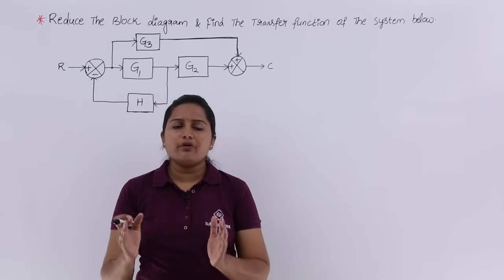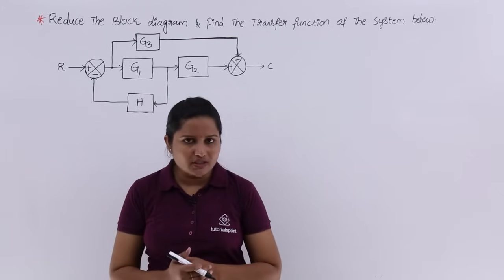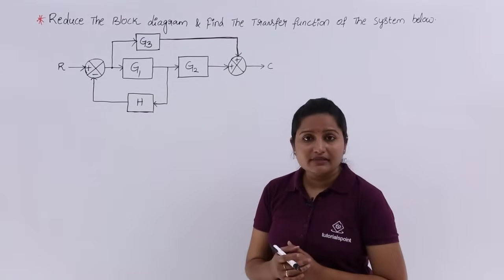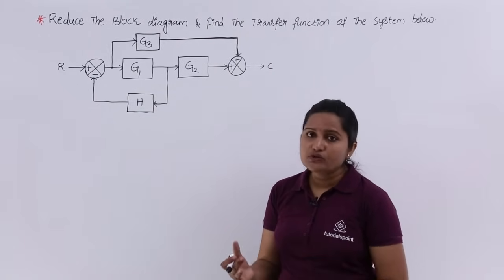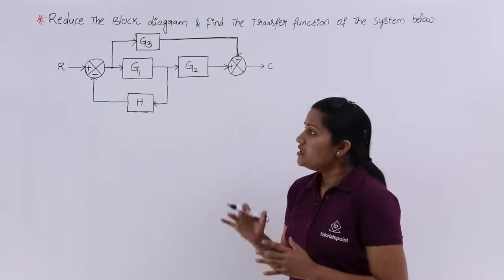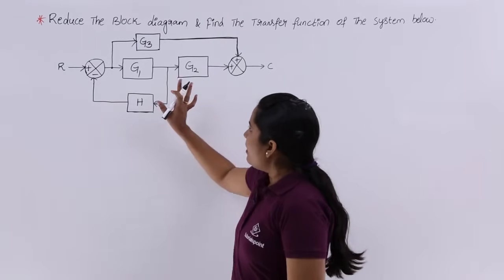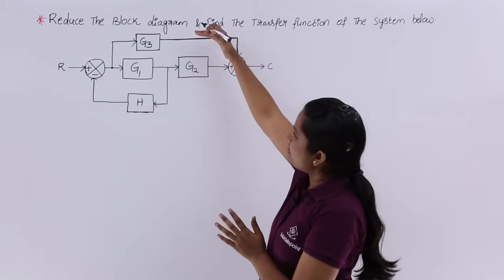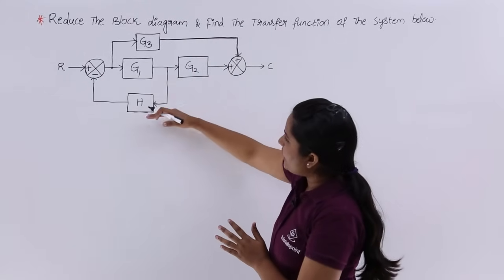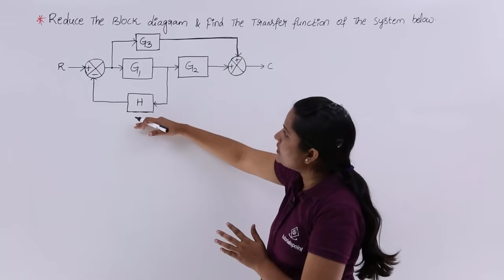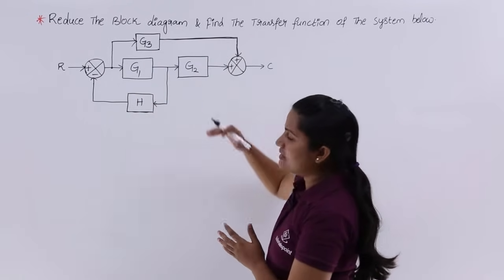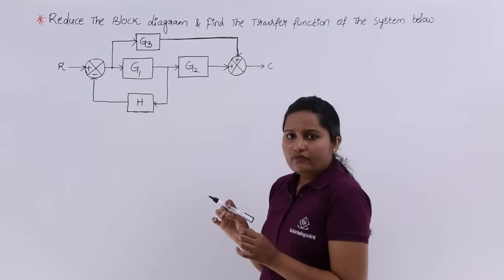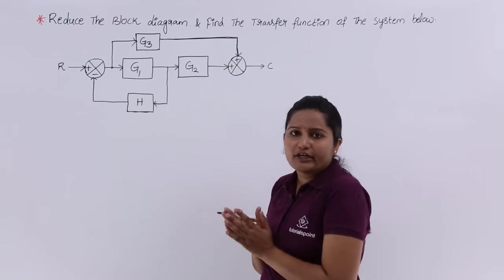Finally, that single block represents the transfer function of the system. From the last class we got some rules for block diagram reduction. By observing the diagram, we can see we are having some parallel blocks, some feedback paths, and some series connections.